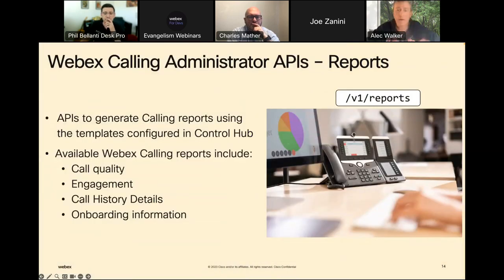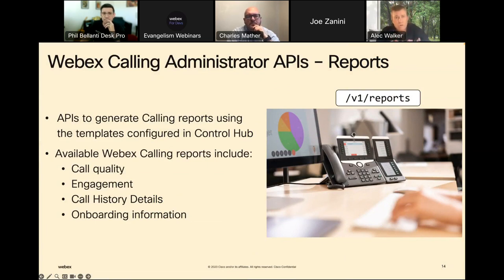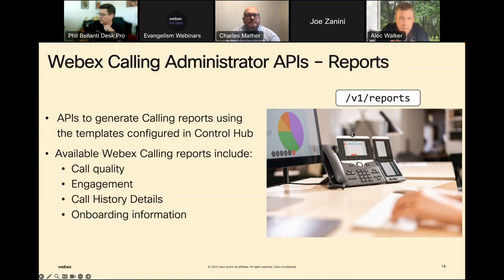We do have reports APIs available. Everything that you can access in Control Hub in terms of call quality and engagement is available via API. Next, the one we're really excited about is the API for call history. This is a customer API — we're soon to launch a partner API that does very similar functionality. This does near-real-time, within five minutes, collection of CDRs — call data records. You can slice and dice this, and it really opens up analytics not just from what we can provide, but for partners and customers looking to do more with their analytics.